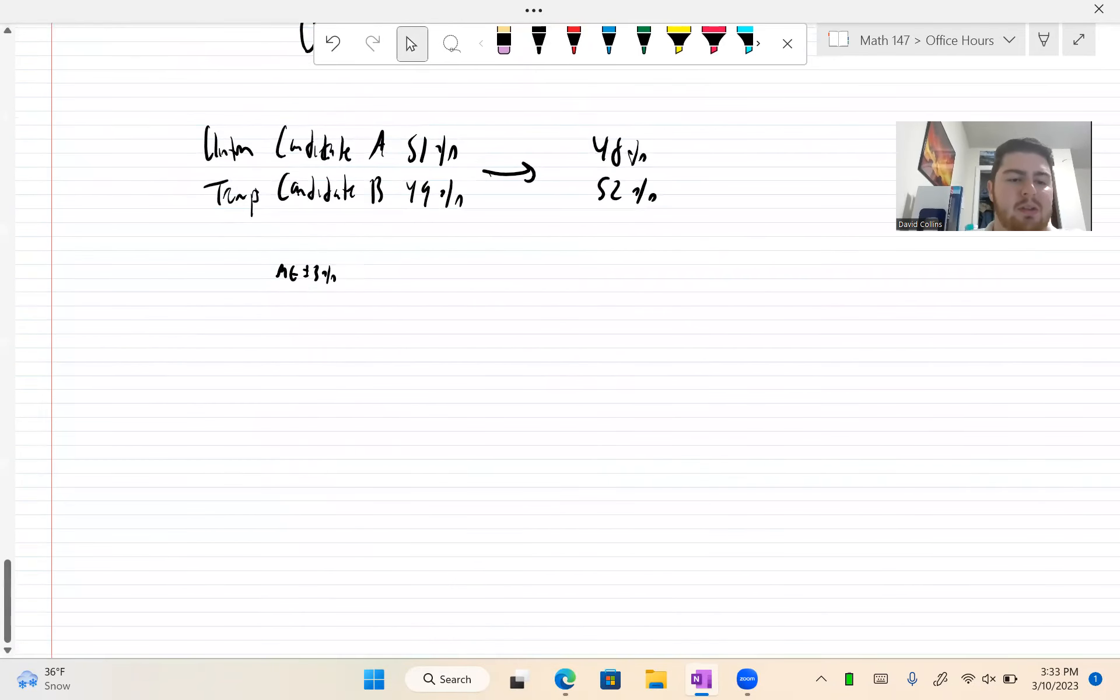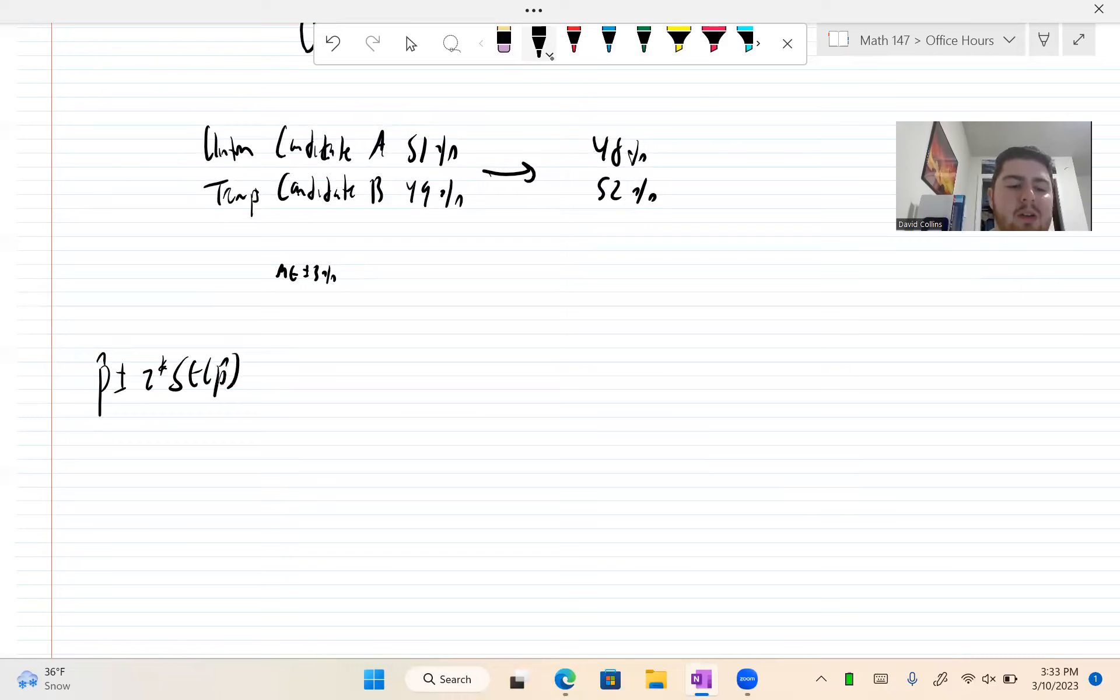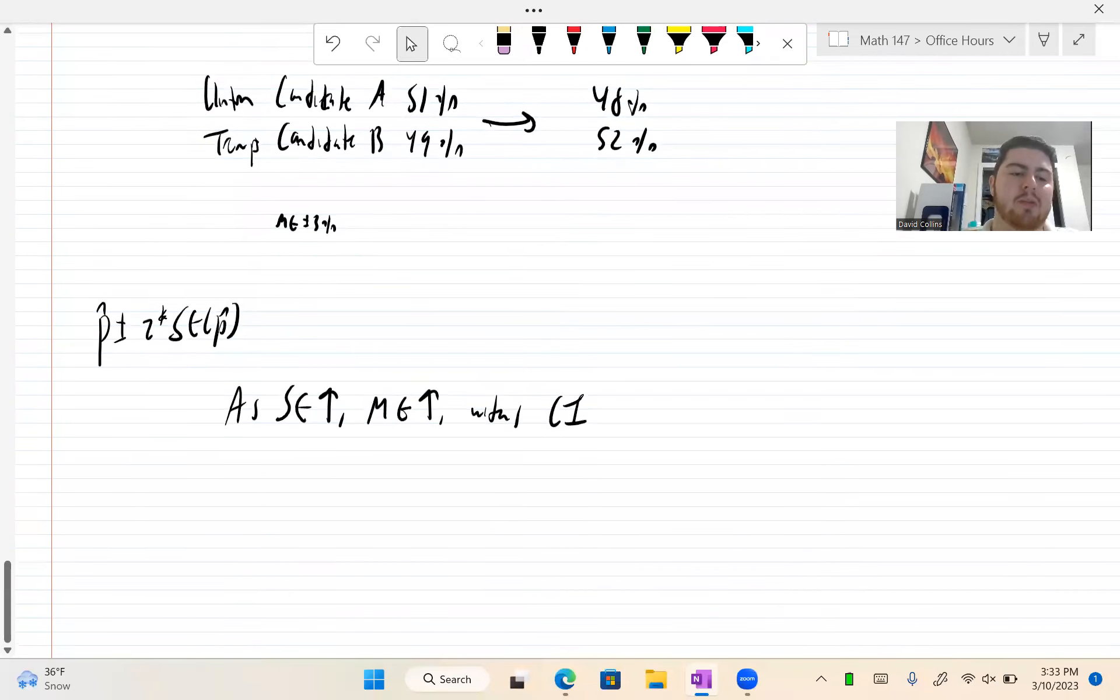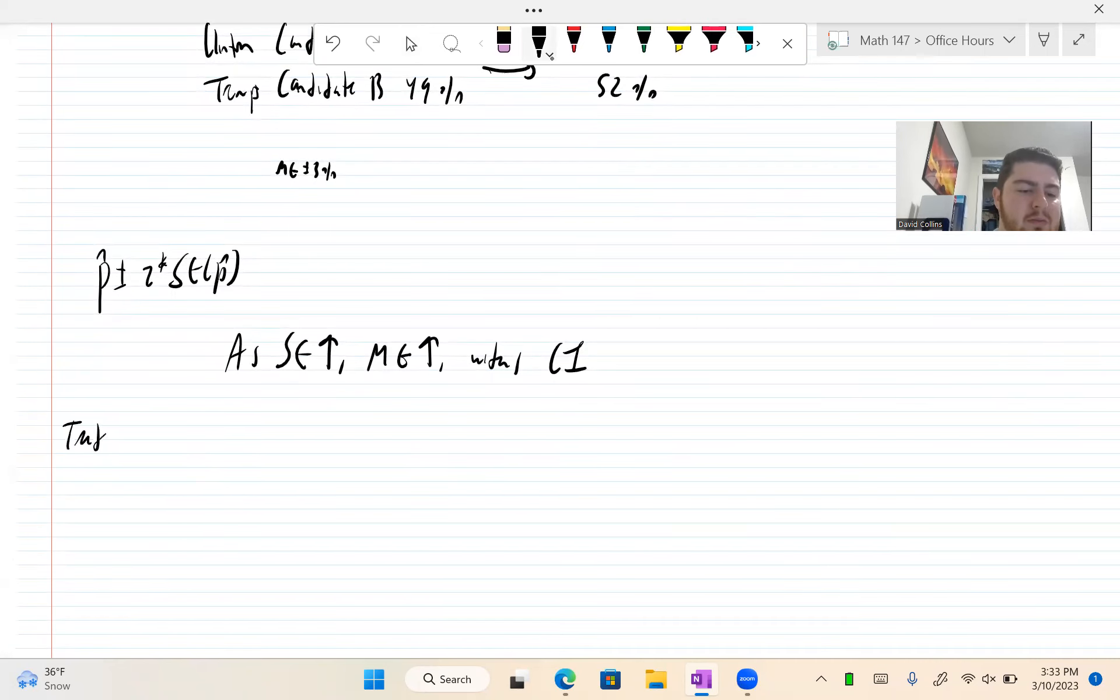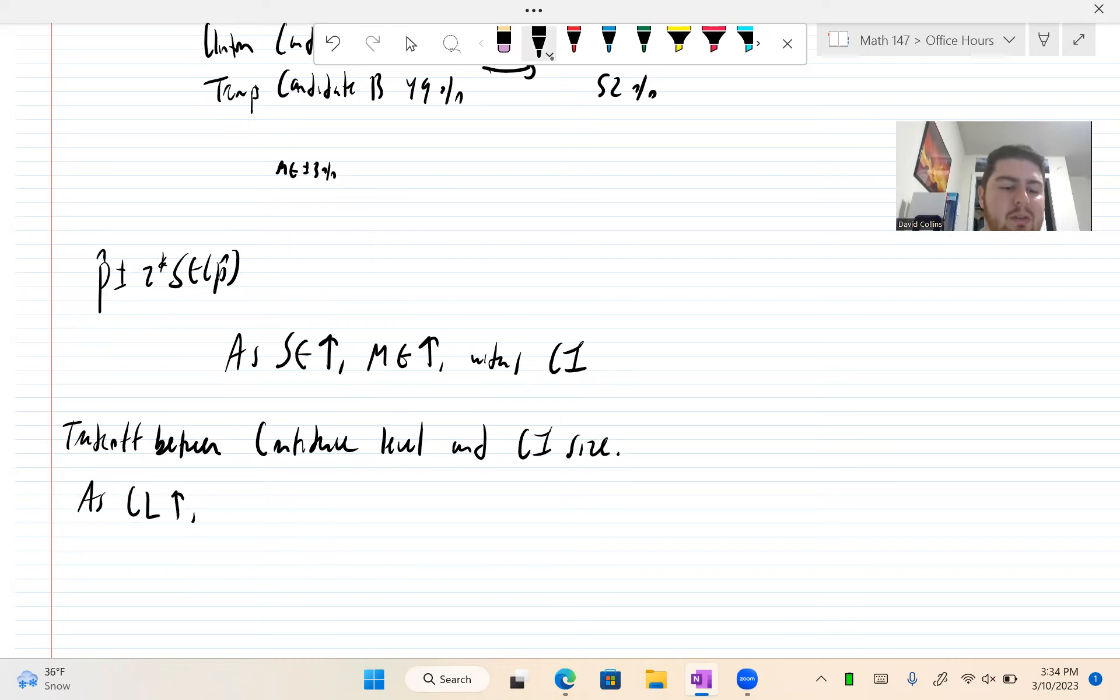So there's important things. So our confidence interval, again, is P hat plus minus Z critical times the standard error of P hat. As the standard error increases, our margin of error increases, which widens the confidence interval, right? Because we're multiplying a number, so we're spreading it out further. Similarly, there is a tradeoff between confidence level and confidence interval size.